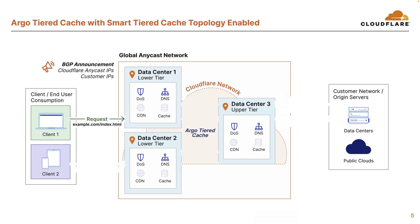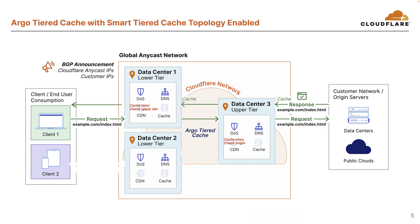So when client one sends a request to the closest data center — data center one — if the content is not cached, the upper tier data center labeled data center three is checked. If the content is not cached at the upper tier, the upper tier requests the content from the origin. Once the response is returned from the origin, the upper tier caches it and returns a response to the lower tier, which also caches it and returns a response to the client. Now let's say client two makes the same request for the same content to its closest data center, data center two. If the content is not cached at data center two, similar to prior, the upper tier data center is checked. However, in this case, content was requested prior via client one and the upper tier data center has the content cached and returns the cached content to the lower tier data center — data center two — which in turn caches the content and responds back to the client, decreasing latency, saving bandwidth and load on the server and providing better overall performance.